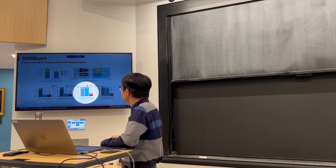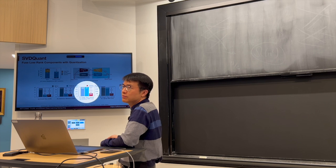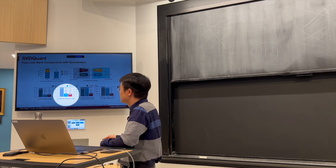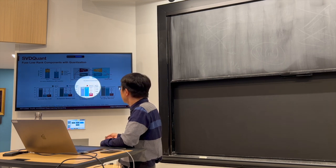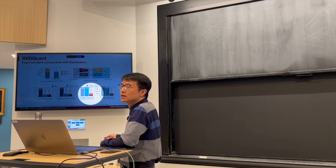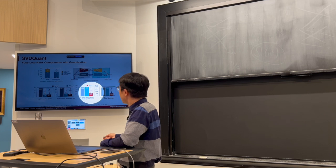However, this is the beautiful part. So this is the exciting part, where the conventional W4A16 work can only reduce the memory, but it doesn't lead to any speedup. It's actually slower, because we still need 16-bit arithmetic. But here, we can use 4-bit arithmetic, either NF4 or FP4. We can achieve more than three times measured speedup on 4090 GPU.